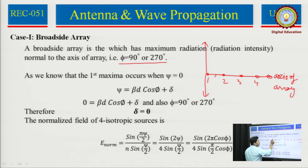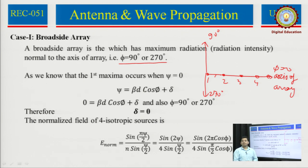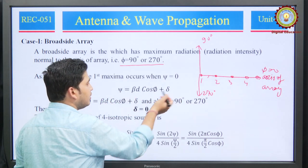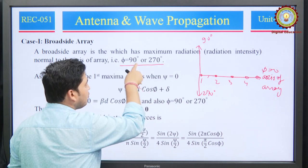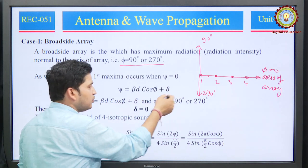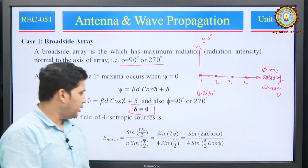Visualizing: if phi=0 degrees, then phi=90 degrees and phi=270 degrees are the directions where I have a maximum field pattern. As we know, field maxima happen when psi=0 or psi tending toward 0. Simply putting psi = beta*d*cos(phi) + delta: when phi=90° or 270°, cos(90°)=0, so the whole expression goes to 0, which leads our initial phase delta to be 0.